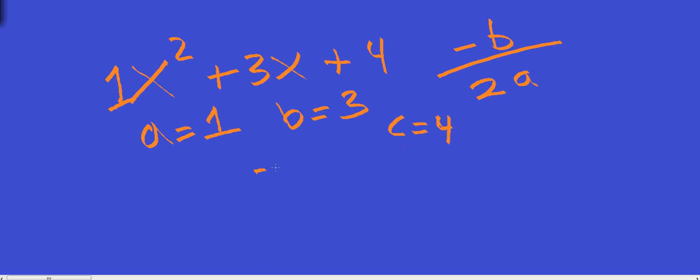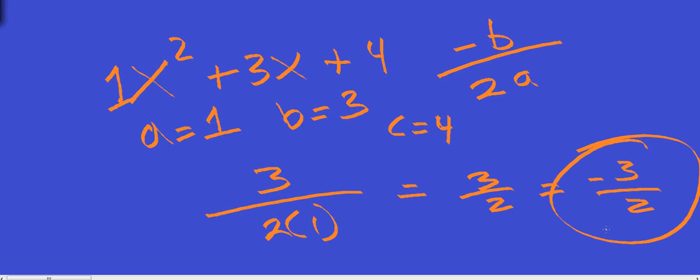We're going to take our 3, do 2 times 1, which is 3 halves, and then we're going to take the opposite of that because our formula has that negative sign. So our axis of symmetry is negative 3 halves. If you're in my class, leave it as negative 3 halves. Some teachers like negative 1.5. One more example.